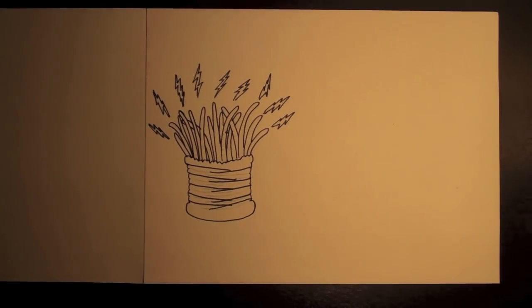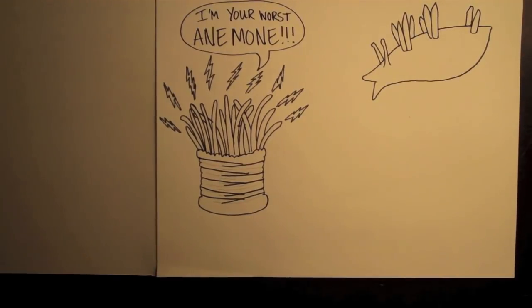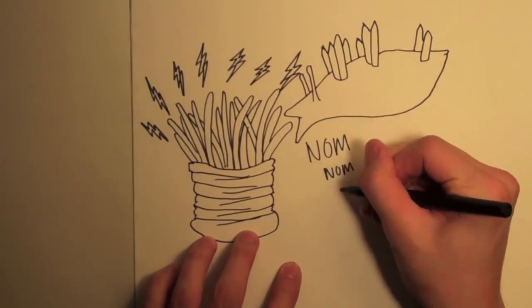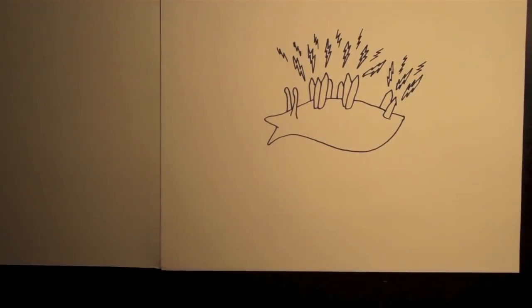Perhaps the gnarliest characteristic nudibranchs possess is the ability to steal powers from their prey. They are carnivores that feed on sessile invertebrates like this anemone. The nudibranchs can digest the anemone's toxins and refashion them to use for their own protective purposes.